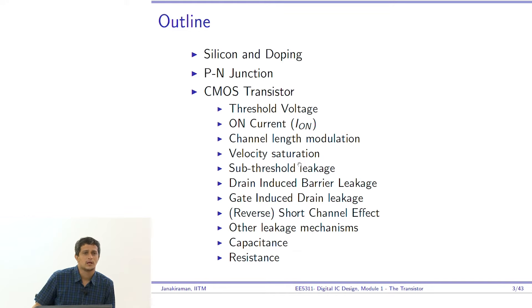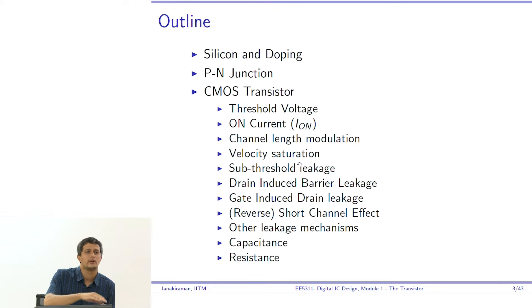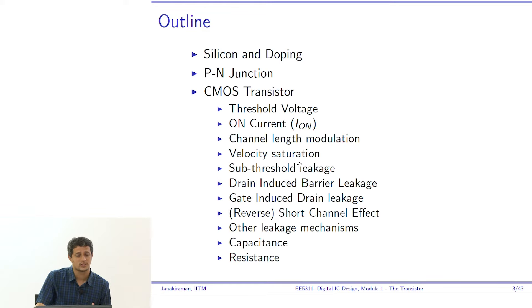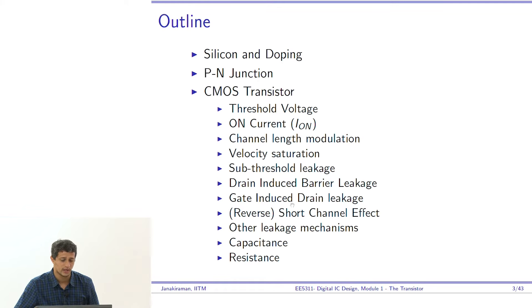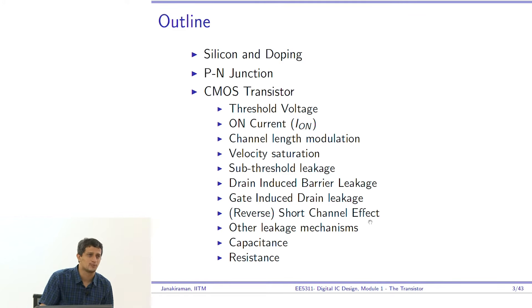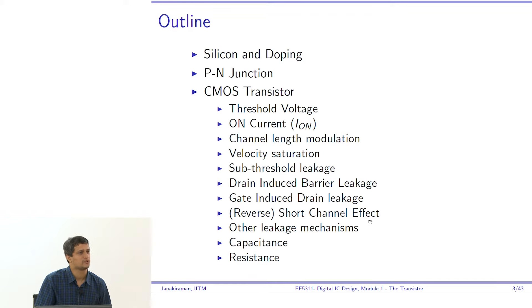The outline: I am going to briefly cover silicon, doping, and the PN junction only with respect to what we need for the CMOS transistor. I will not derive the current equation for a PN junction — that is for a different course. I will quickly jump into the CMOS transistor and define threshold voltage, derive the on current, channel length modulation, velocity saturation, subthreshold leakage, and other short channel effects, leakage mechanisms, and then capacitance and resistance estimation.